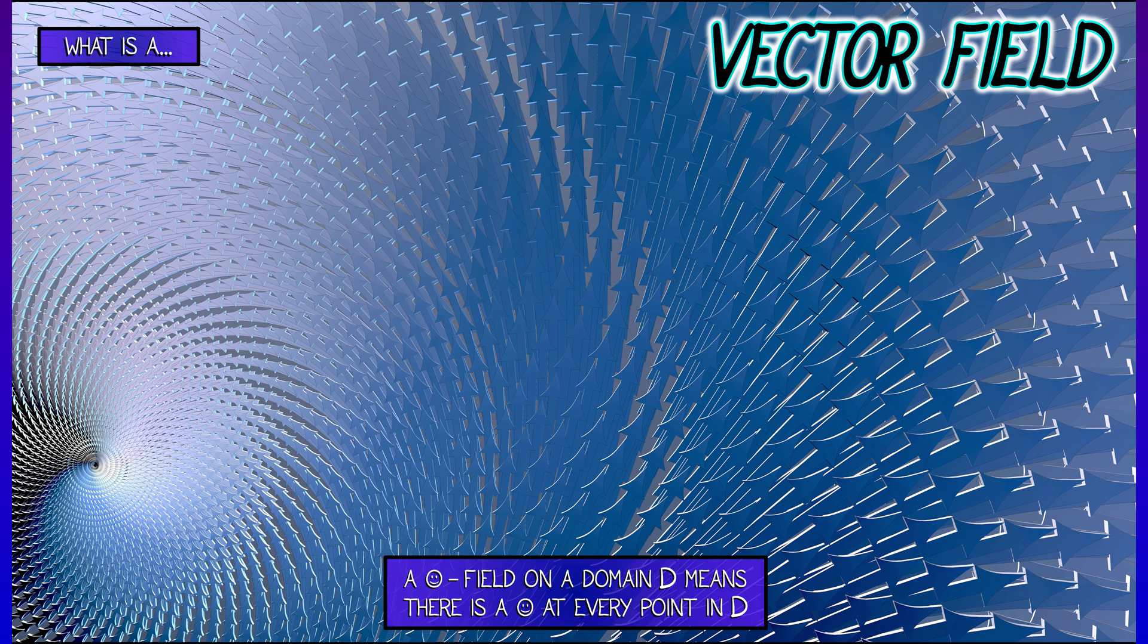So we have scalar fields, we have vector fields. What else is there? Well, I don't know. There are lots of values of smiley.